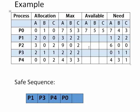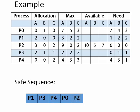Next we check P2. P2 requires 6 0 0 resources and we have 7 5 5, so we can clearly satisfy this request. After completing, P2 releases 3 0 2 resources, making available 10, 5, and 7. We add P2 to the safe sequence. So the safe sequence for our given problem is P1, P3, P4, P0, and P2.